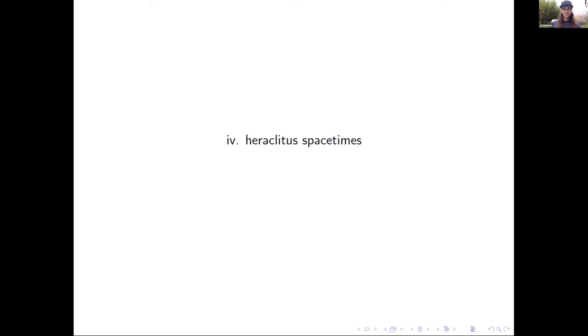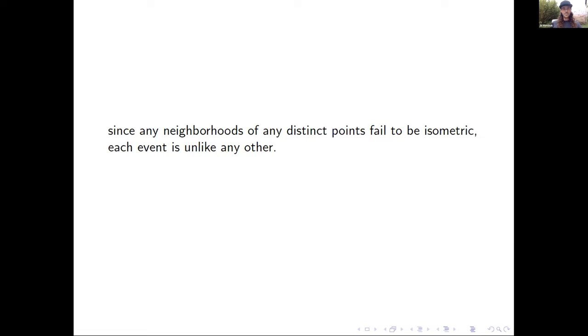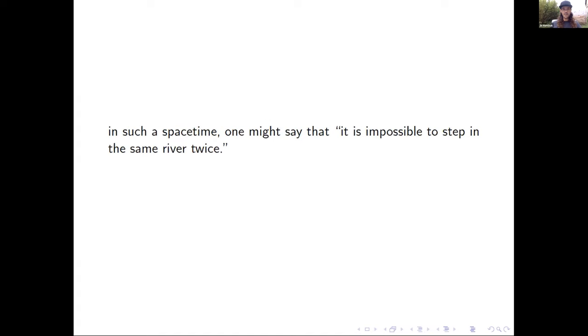The next condition in the symmetry hierarchy requires that the local symmetries of spacetime be completely fixed. We say that a spacetime is Heraclitus if for any distinct points P and Q and any open neighborhoods around these points, there is no isometry from one neighborhood to the other which takes P into Q. Since any neighborhoods of distinct points fail to be isometric, each event is completely different from every other event — in such a world, it's impossible to step into the same river twice.